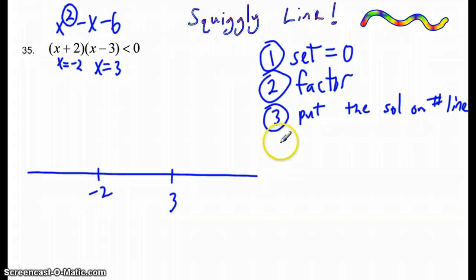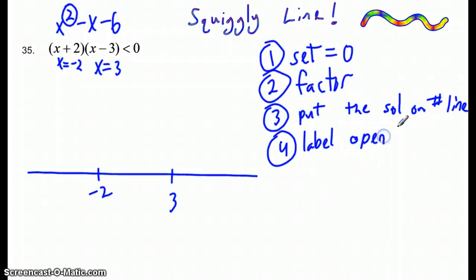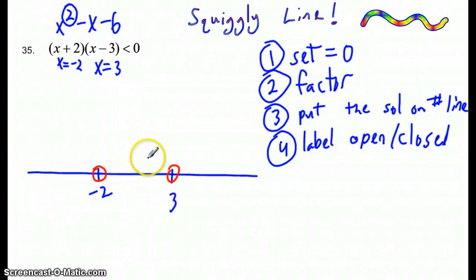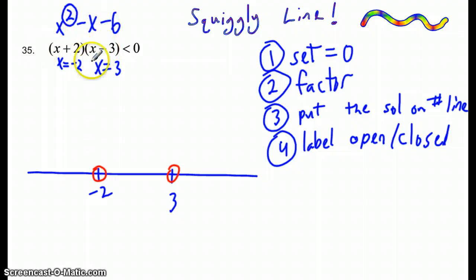Fourth step: I always like to label the points open or closed. This is a less-than inequality with no equal sign, so both of these points are going to be open points. Think of this line as: above the line is positive, below the line is negative, and on the line is equal to. Since there's no equal sign, these x values can never be equal to 0 — they must be smaller than 0.